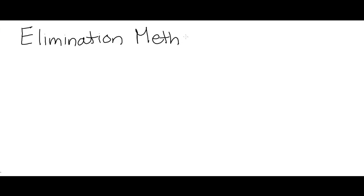Let's explore the elimination method. This is also called the addition method because that's really what we do — we eliminate a variable between our two equations by using addition. We can call it elimination because that's our goal, to eliminate one of the variables temporarily, or we can call it addition because that's the actual technique involved.